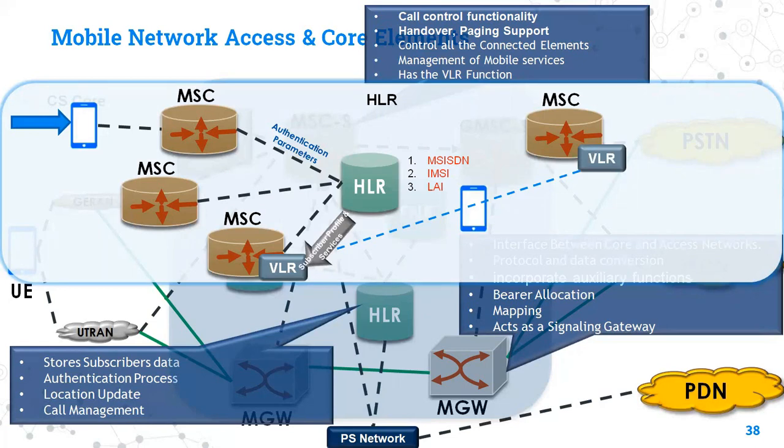Now, what is the subscriber data that is stored? Like the MSISDN, which is our numbers, the IMSIs, and the location area identity of all the subscribers. At the same time, it also stores data like supplementary services such as Call Forward and Call Barring.